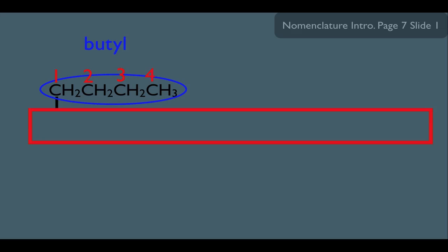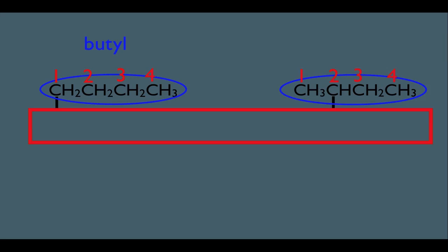However, what if we have this substituent right here? Notice it's also four carbons long, so that means it's definitely some kind of butyl. But look where it is connected to the main chain. We're connecting the second carbon within the substituent. That makes it different from the one on the left, and in fact, we would name this substituent sec-butyl.